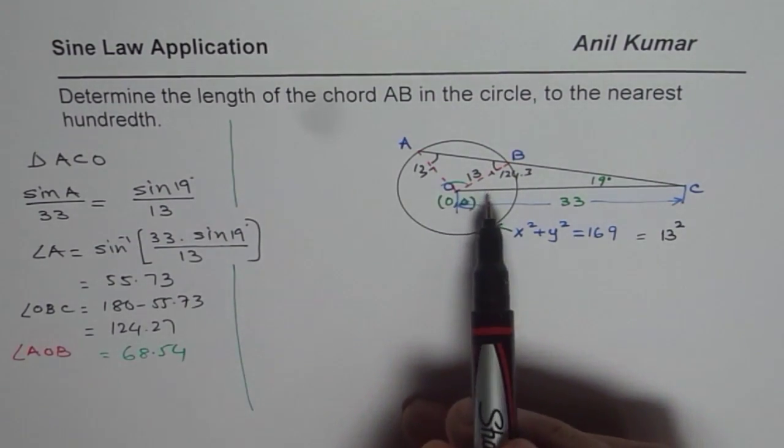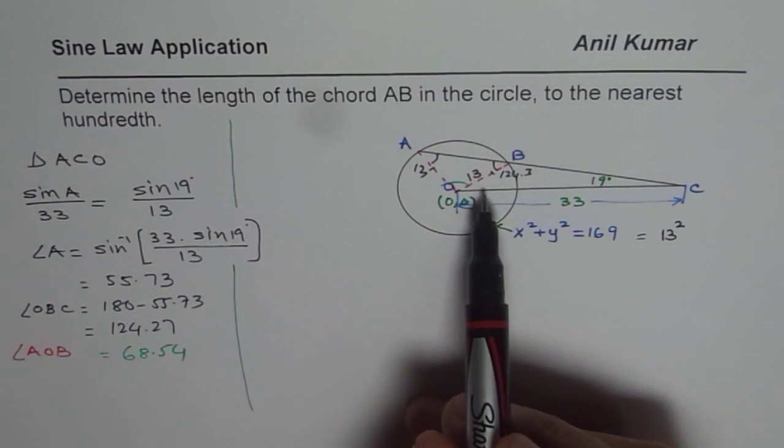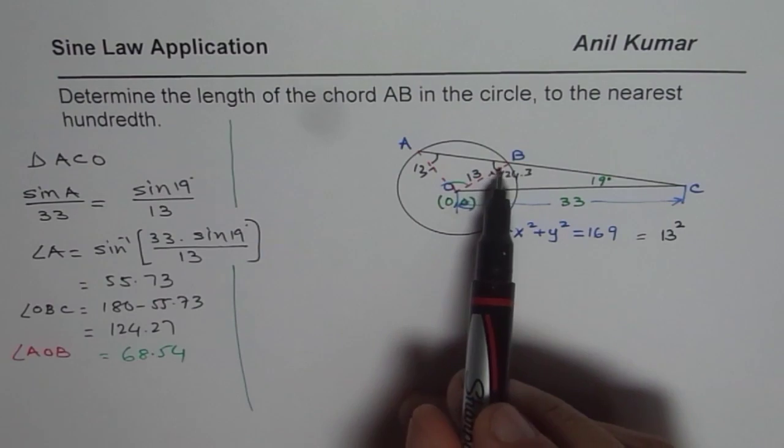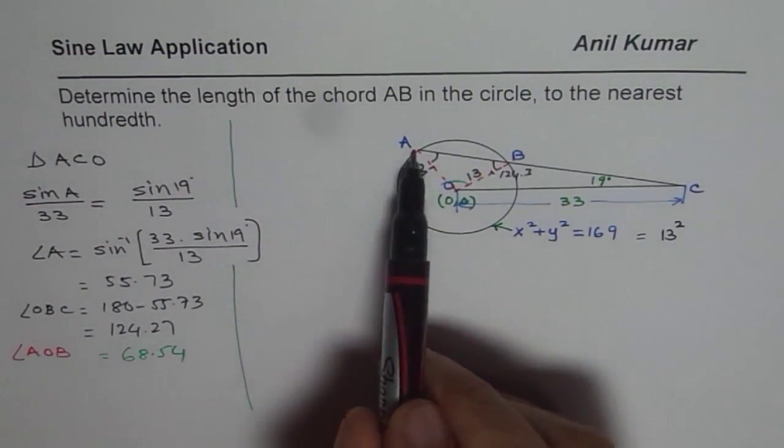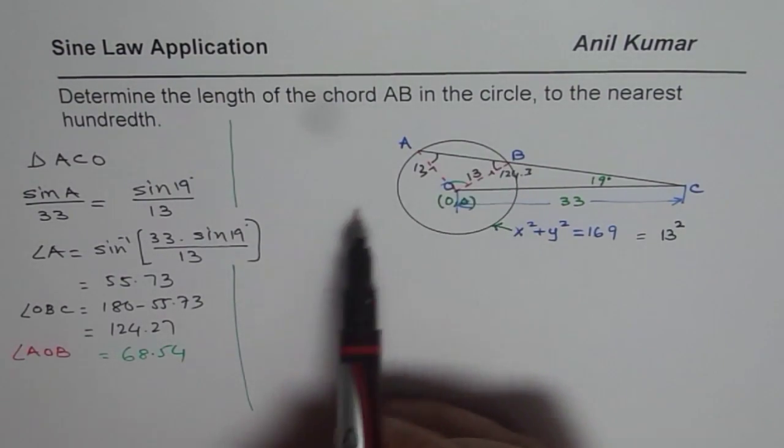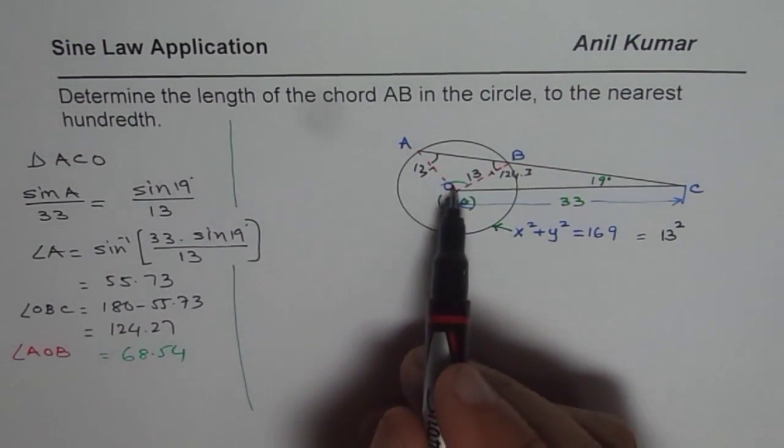So there are two alternate ways. If some of you who haven't learned cosine law can use sine law twice, finding the length AC and BC, then their difference will give you AB. The other method is use cosine law.